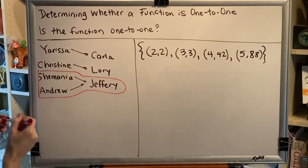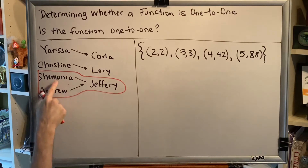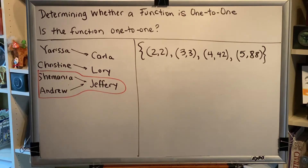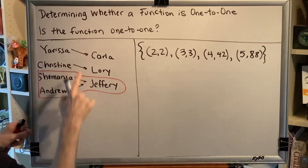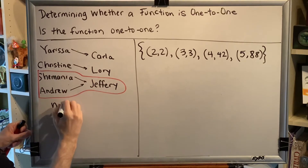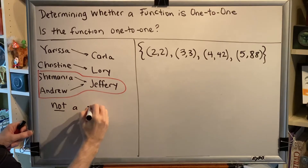In this particular instance, two different inputs — Shamania and Andrew — both lead to the same output, Jeffrey. And for that reason, this function is not a one-to-one function.